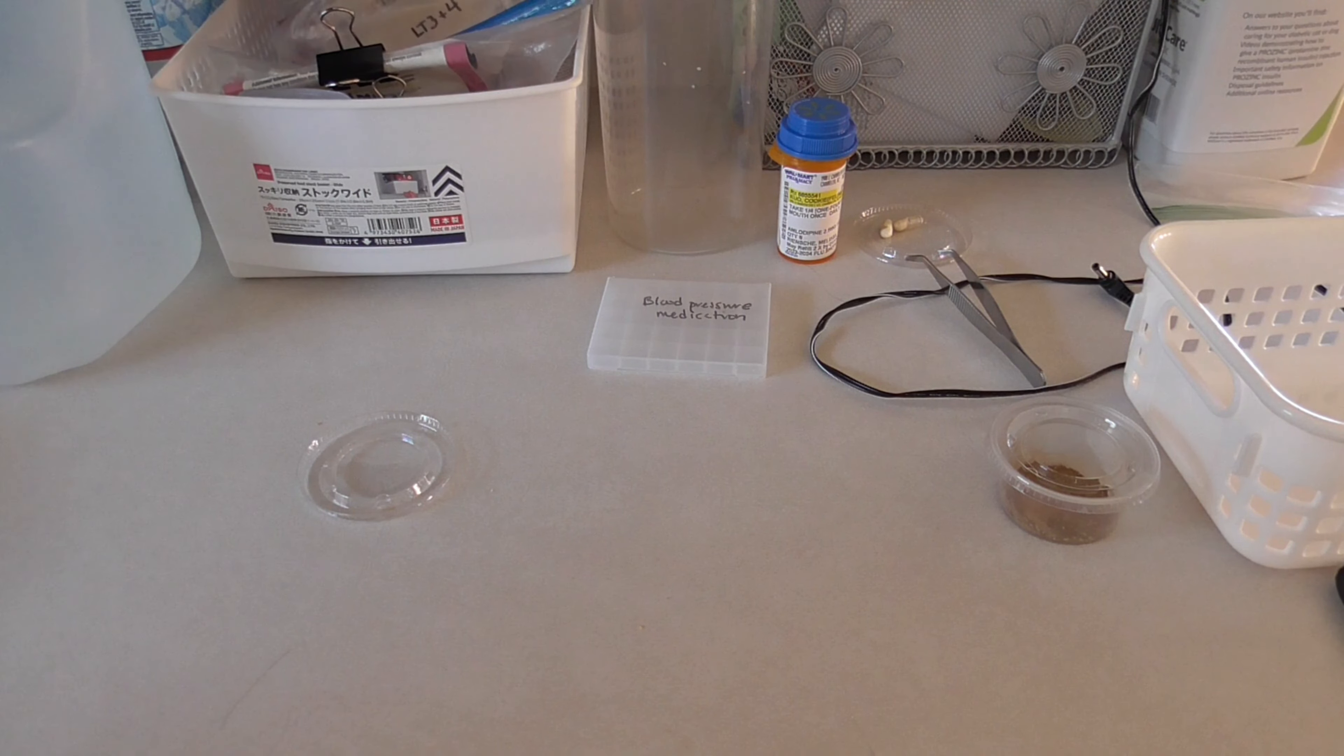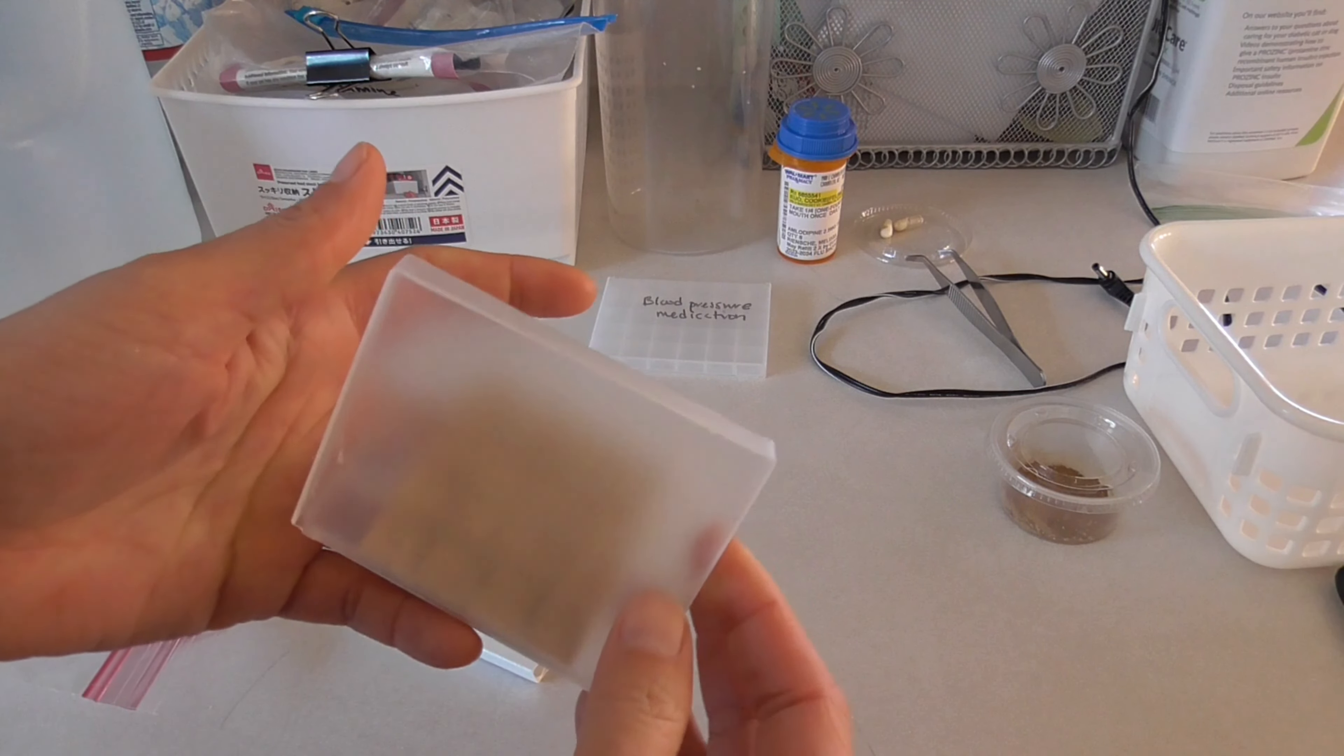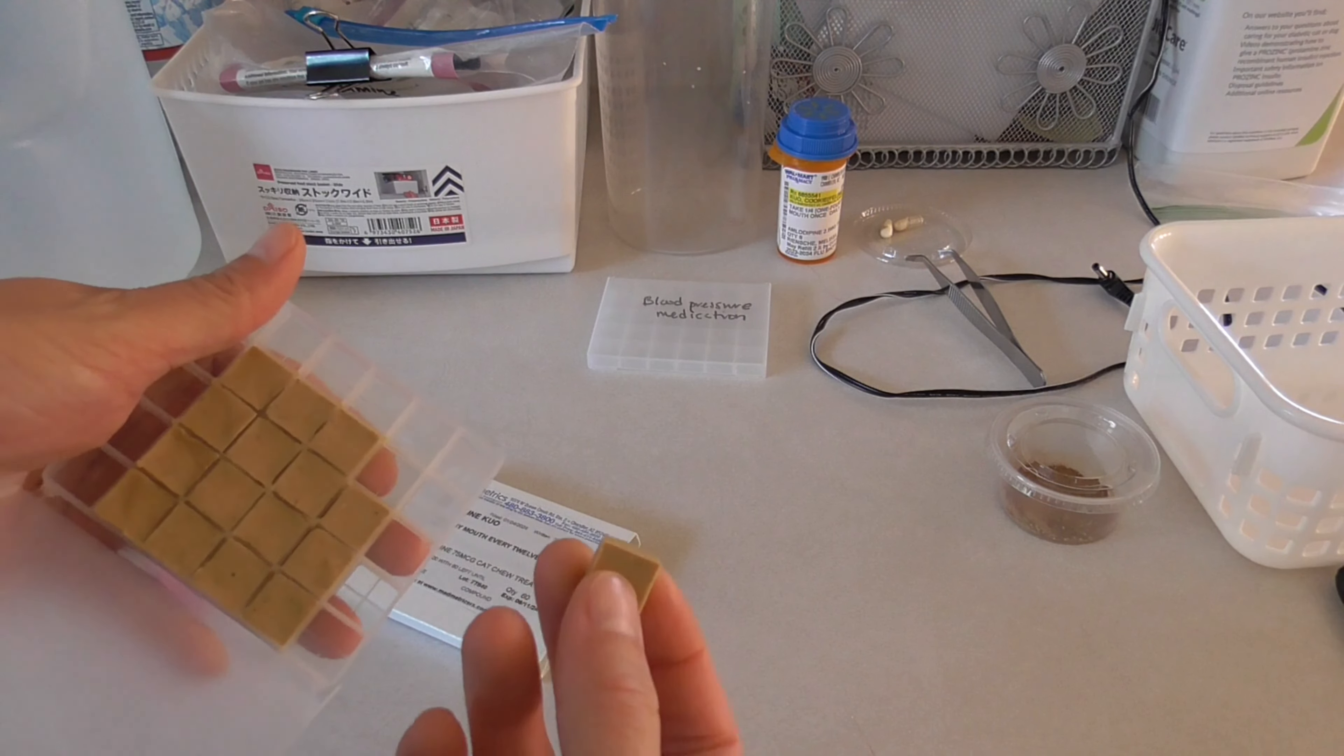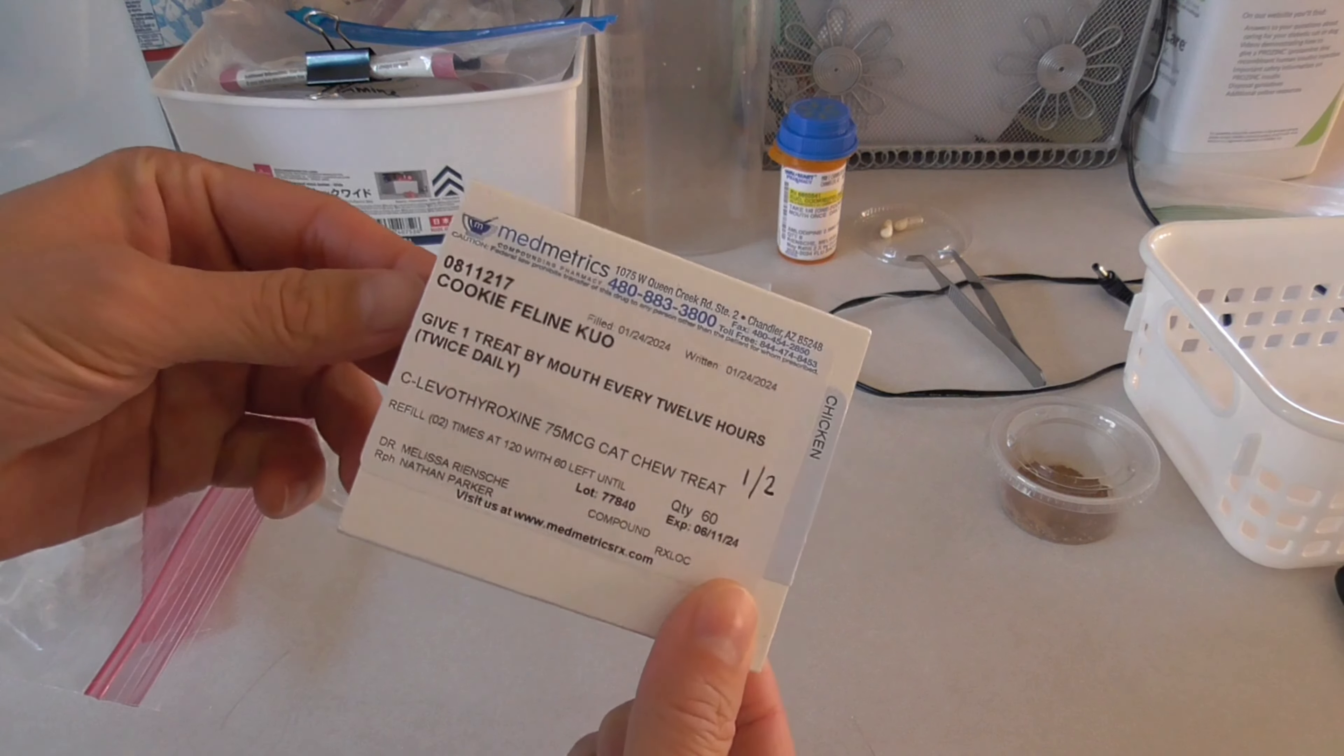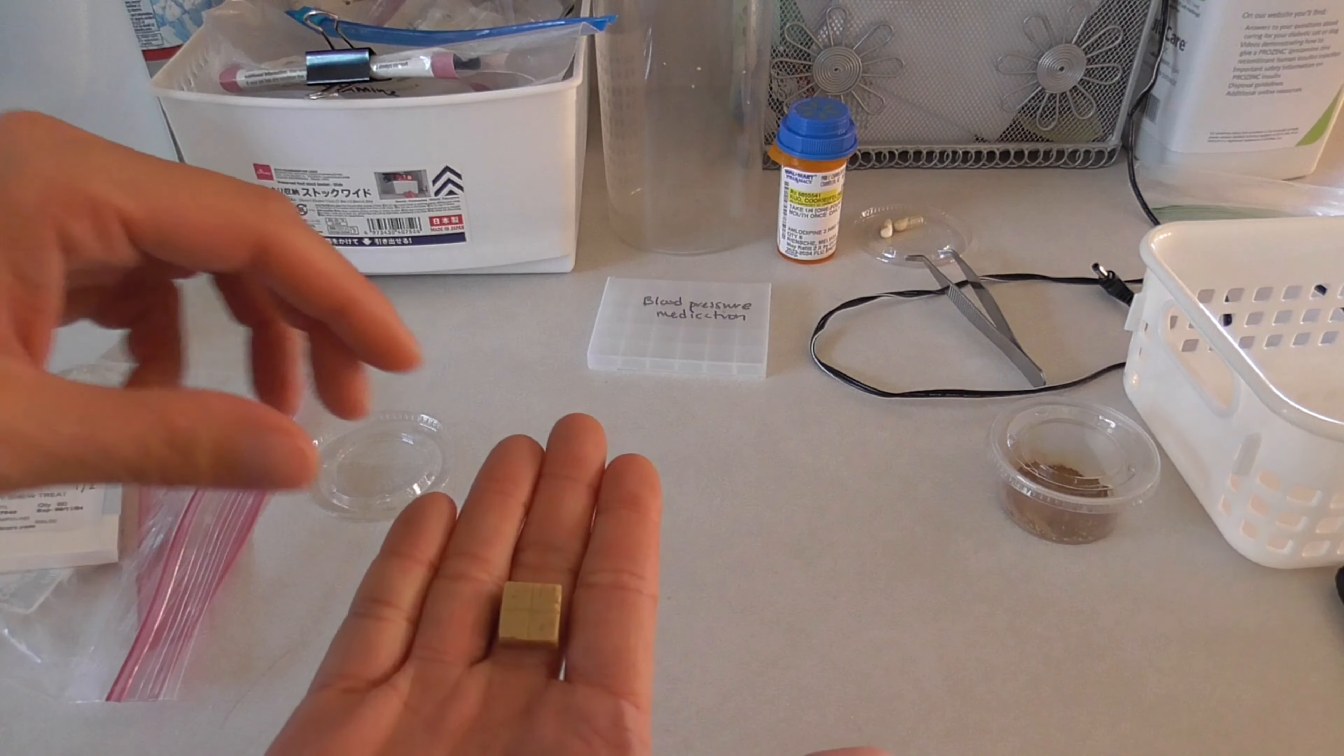One of the medications that Cookie is on is levothyroxine to treat hypothyroidism, because Cookie is hypothyroid after her radioiodine therapy. She was hyperthyroid before and the therapy cured her of the hyperthyroidism but left her thyroid not fully functional. So she's supplemented with levothyroxine. I get her levothyroxine medication compounded into these treats, like these chicken chews. Unfortunately this type of compound is extremely expensive, about $95 for a month worth of these treats, and these are twice a day. So we get 60 treats for $95.